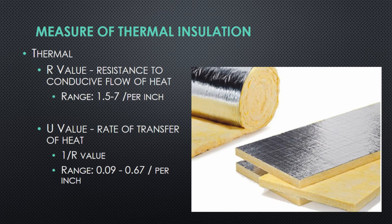The unit to measure the effectiveness of thermal insulation is the R-value, which technically measures the resistance of a surface to the conductive flow of heat. The higher the resistance of any surface to the flow of heat, the better the thermal insulator, because it resists the transfer of heat between the two spaces. The higher the R-value, the better insulation the material provides. A typical range of R-value for common construction insulation materials is from 1.5 to 7 per inch of thickness.